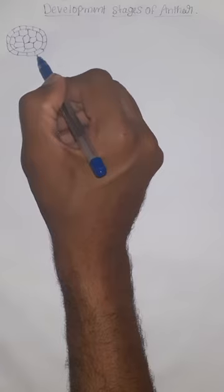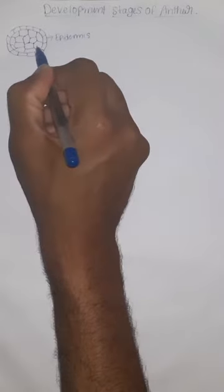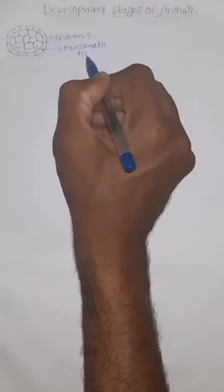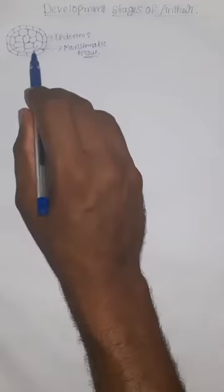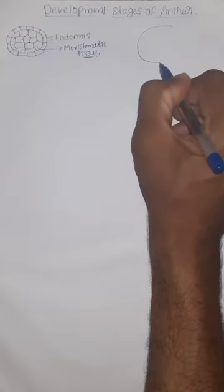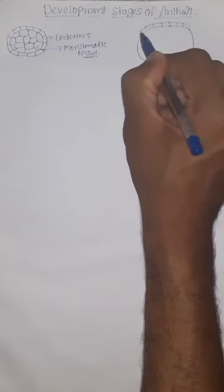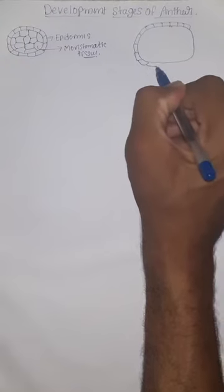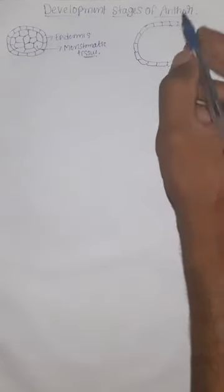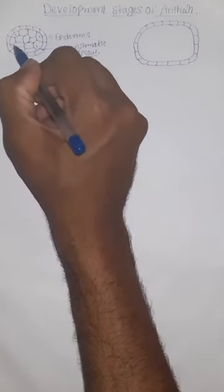Whenever we cut a very young anther, the anatomy looks like this. We can see one layer of epidermis, and inside there will be meristematic tissue. This is the first stage of anther anatomy. In the next stage, the size will increase somewhat, and the epidermis remains the same. In this step, we can see de-differentiation of one cell from each corner.